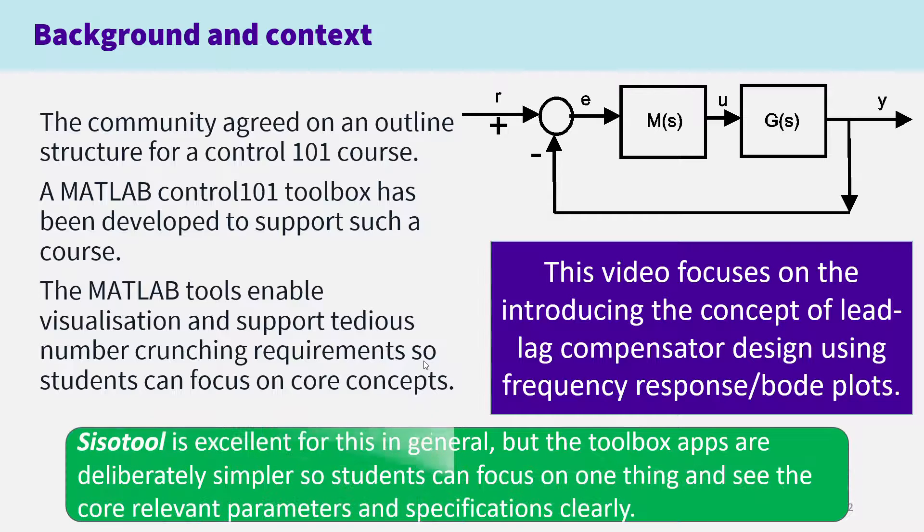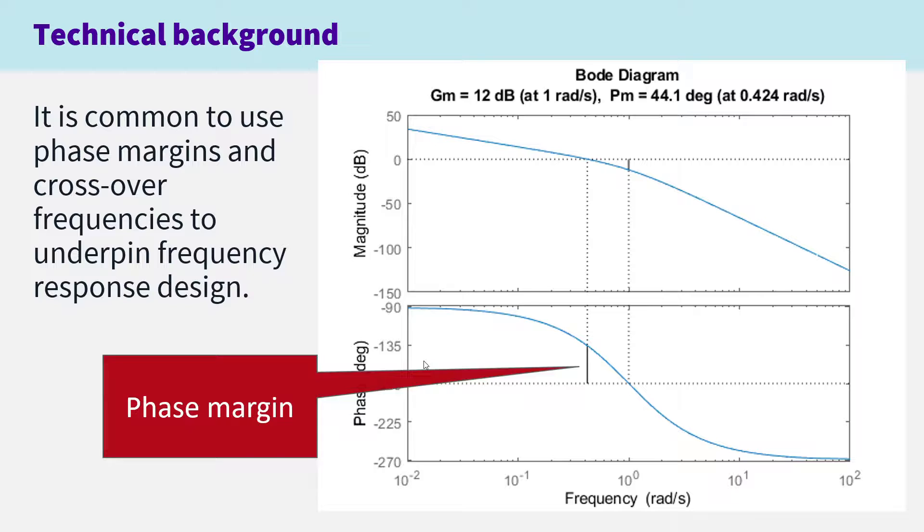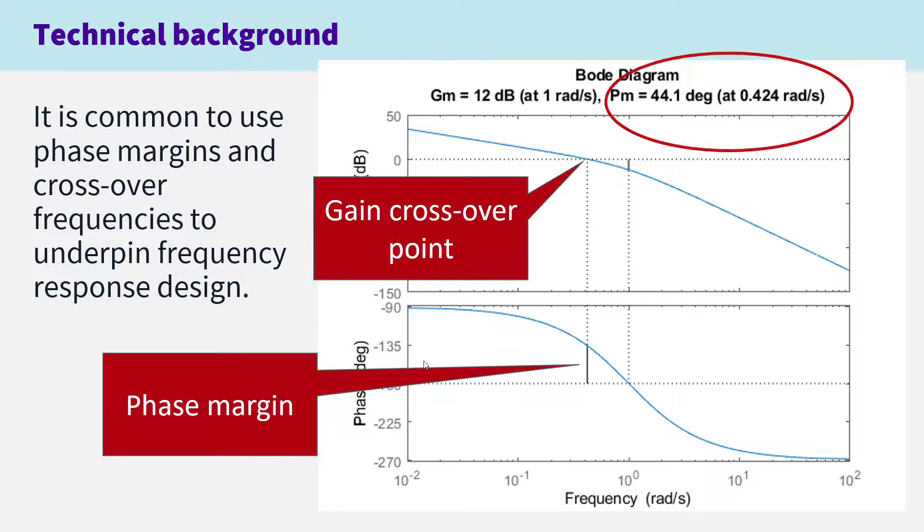It should be noted that SISOTOOL is actually quite good for this in general, but it's somewhat more complicated and doesn't draw attention to the key design decisions and criteria. The purpose of this app is to emphasize those specifications and control parameters so students can understand the steps more clearly. We're going to use things like phase margins and gain crossover frequencies in the design, so it's important that students are familiar with what those mean.